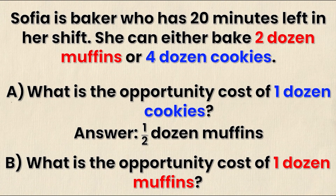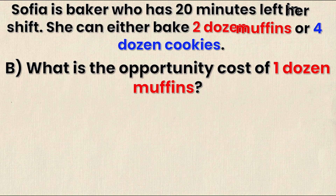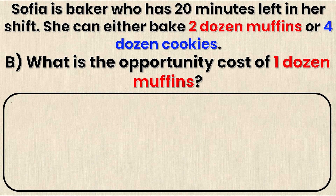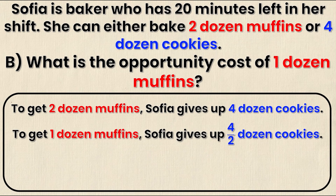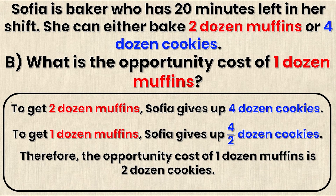So the answer to part A is one half dozen muffins. For part B, what is the opportunity cost of one dozen muffins? Using the same method: to get two dozen muffins Sophia gives up four dozen cookies. We care about one dozen muffins, so we divide both sides by two. Therefore to get one dozen muffins Sophia gives up four over two dozen cookies, which simplifies to two. The opportunity cost of one dozen muffins is two dozen cookies.